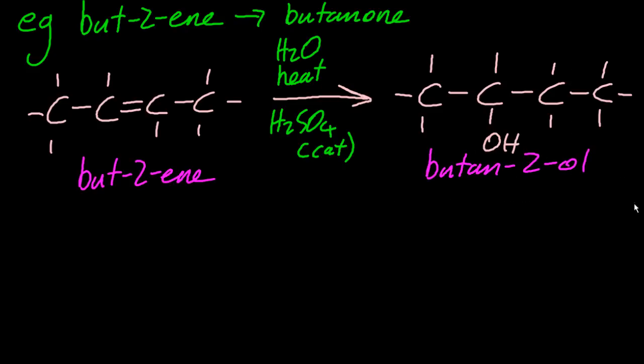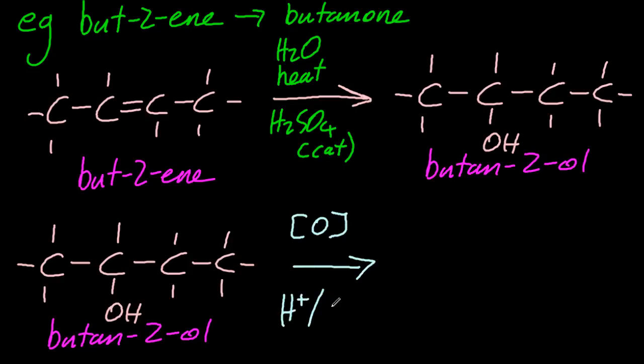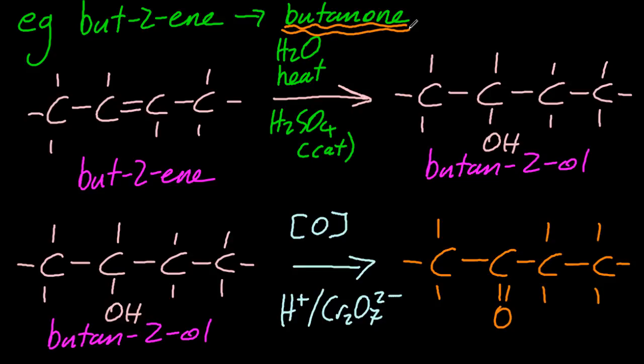And then butan-2-ol, two steps here. The maximum we can ask you to do is two steps. We'll oxidise that to make butan-2-one. It's a secondary alcohol. It turns to a ketone. All right. Let's see what else we have.